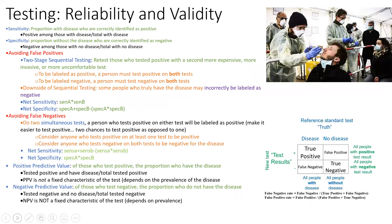Tests need to be both reliable and valid. Tests must be sensitive — people with the disease are correctly identified as positive — and specific — those without the disease test negative. Depending on the disease, we may want to avoid false positives or false negatives. To avoid false positives for stigmatizing diseases like AIDS or invasive treatments like cancer, you would use sequential testing — retesting positives with a second, more expensive test — though this may increase false negatives.